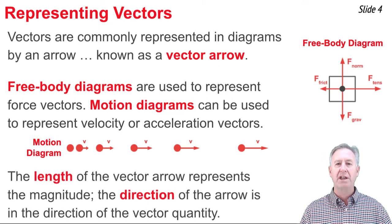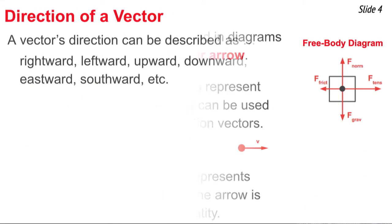In both of these cases, the length of the vector arrow is representative of the magnitude of the vector, and the direction in which the arrow points is representative of the direction of the vector.